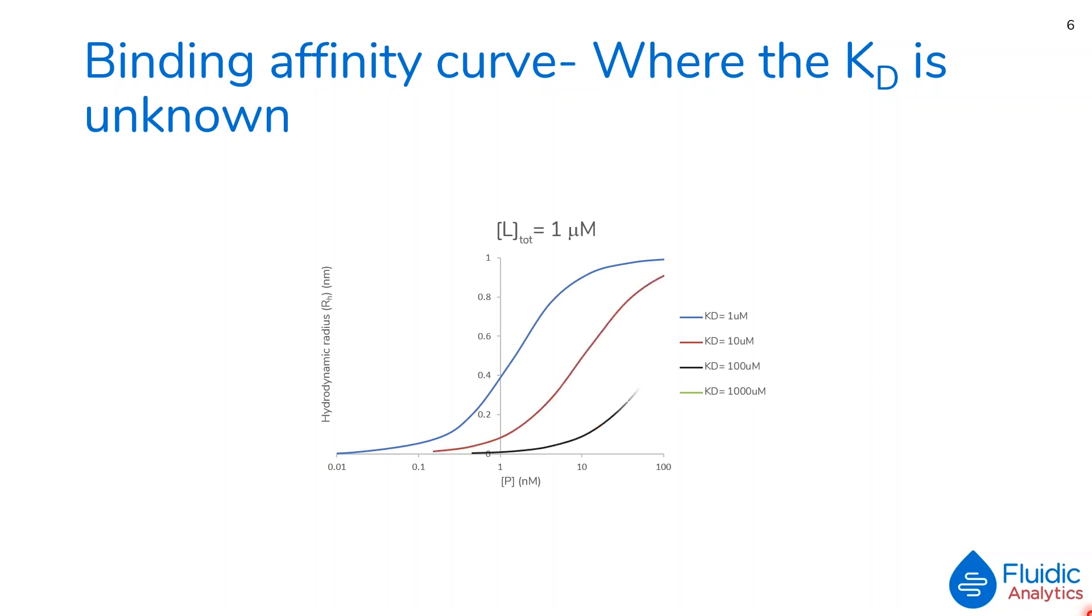In the following set of binding curves, the KD for each curve is higher than the total ligand concentration, which is listed at the top of the graph. As you can see, the binding curves here, while not necessarily reaching plateau, are clearly distinguishable from one another. In other words, the KD value for the binding curve where the KD is 10 micromolar is clearly different from the binding curve where the KD is 1 micromolar.